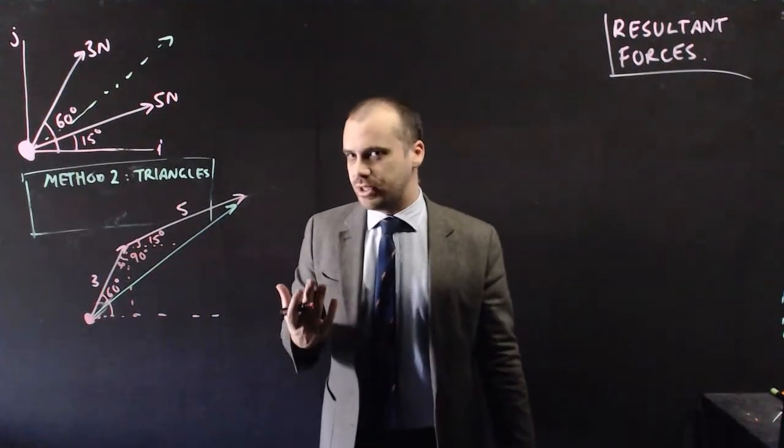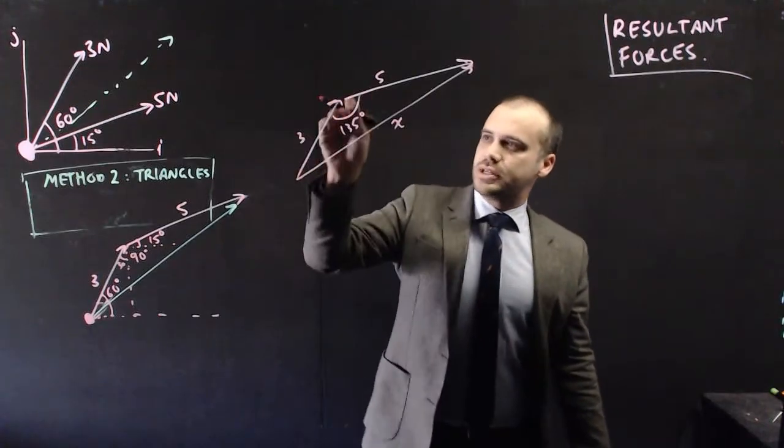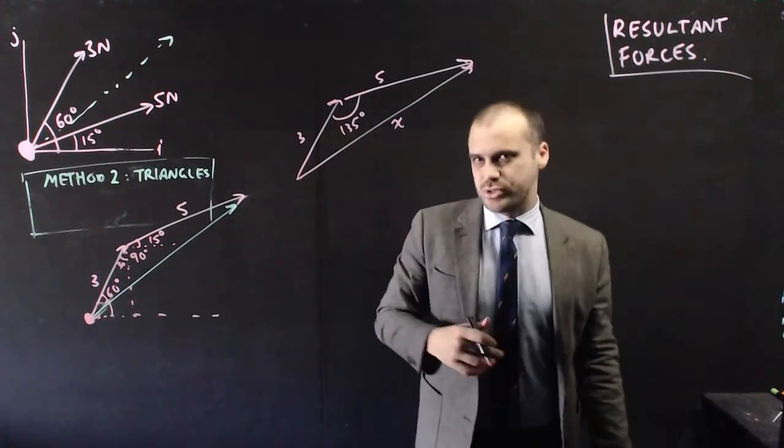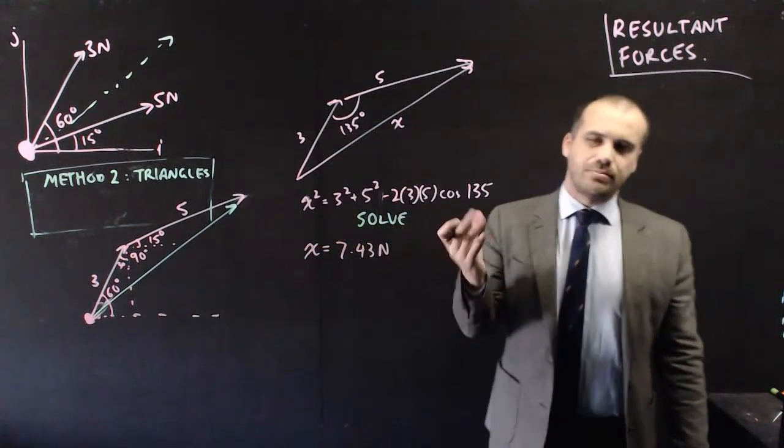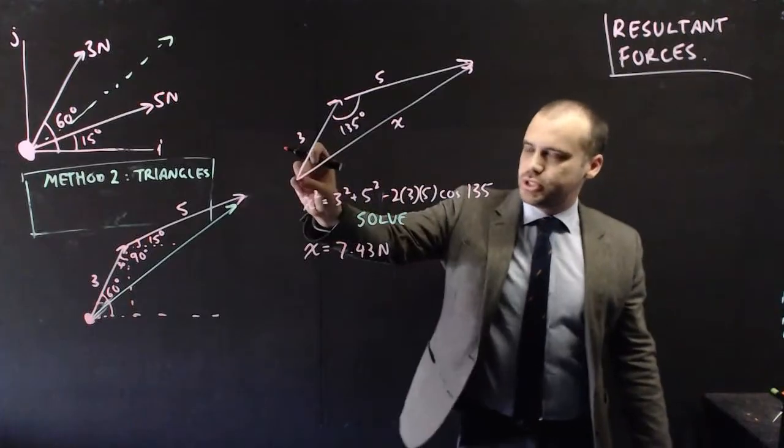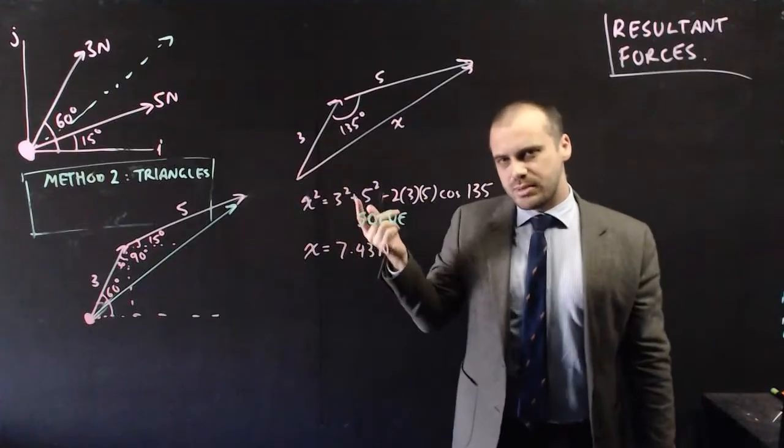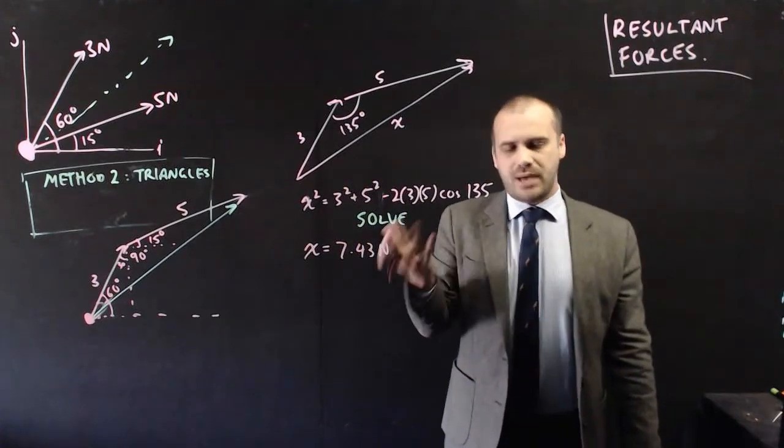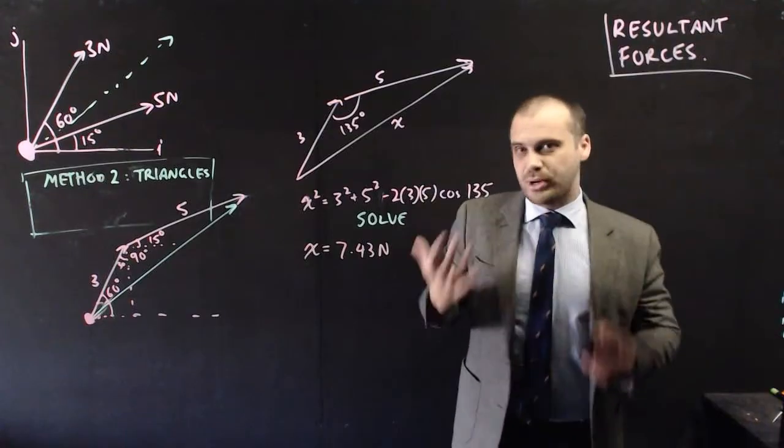So the triangle that we're dealing with is this one right here. And we've got two sides and an angle between, which means we can use the cosine rule. So when I put it into my cosine rule and solve it, I'll get x equals 7.43 newtons, which is the magnitude of this force. It's a little bit different to the previous method, where I didn't initially get the magnitude of the force. I got the force in i and j components.